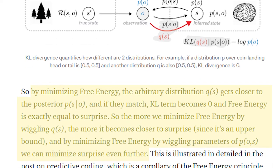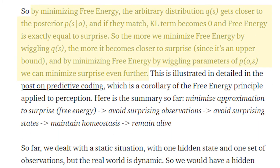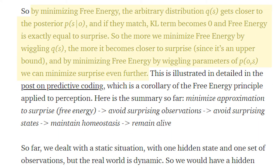Okay, I'm going to quote directly from the tutorial, just to make sure I'm reading it right. By minimizing free energy, the arbitrary distribution, q of s, gets closer to the posterior p of s given o, and if they match, KL term becomes zero, and free energy is exactly equal to surprise.